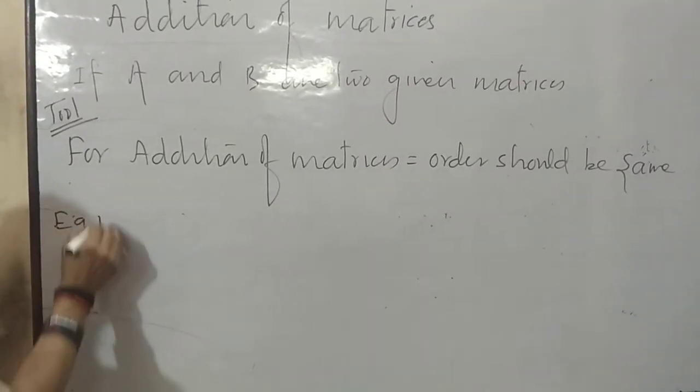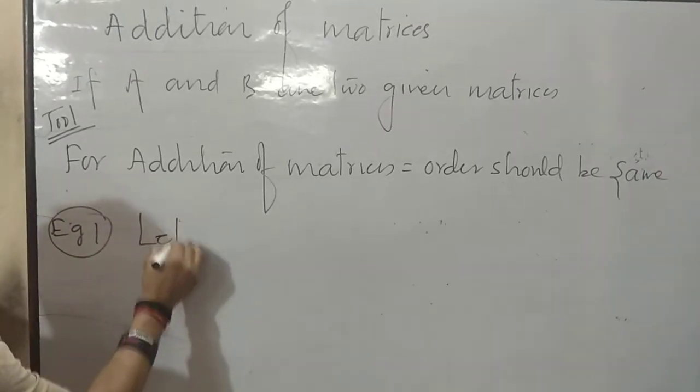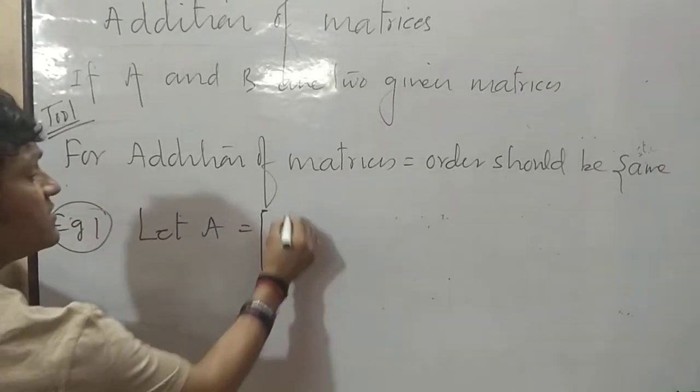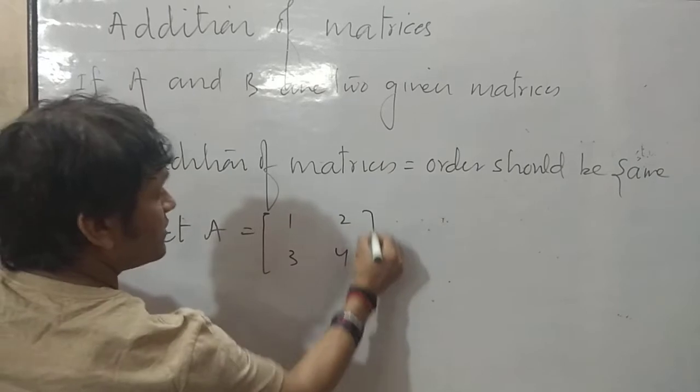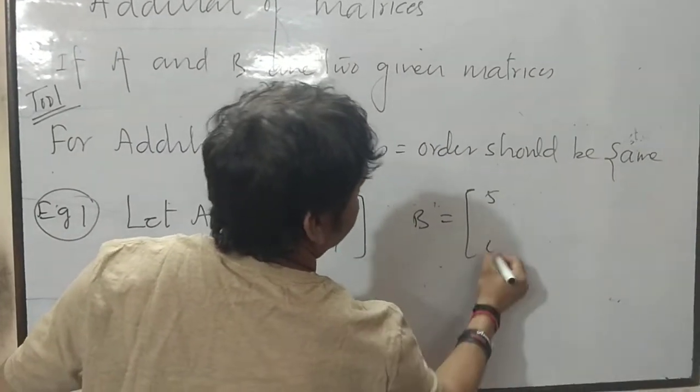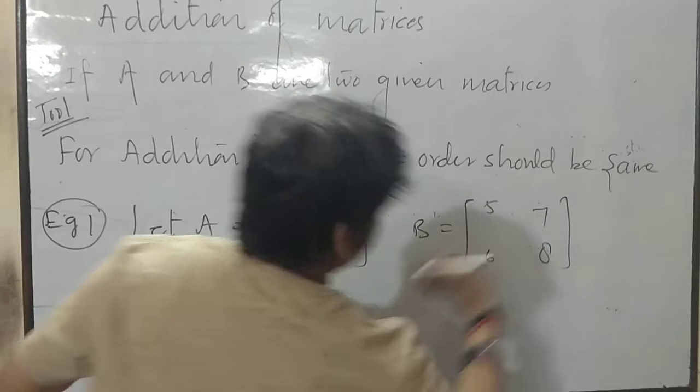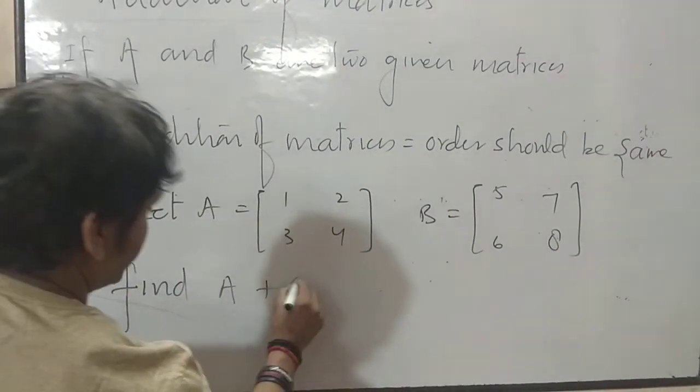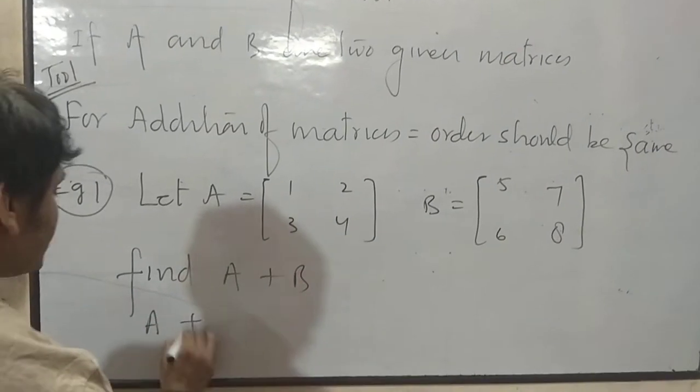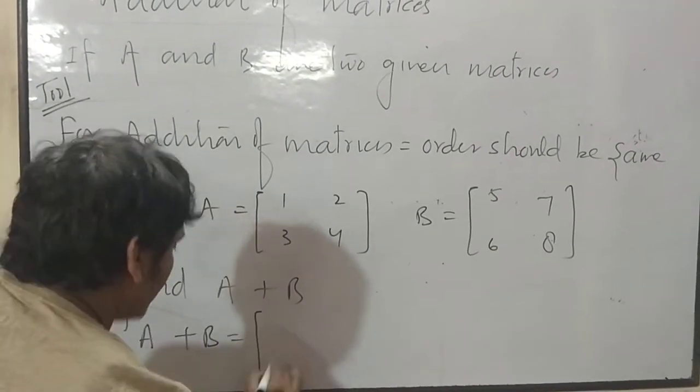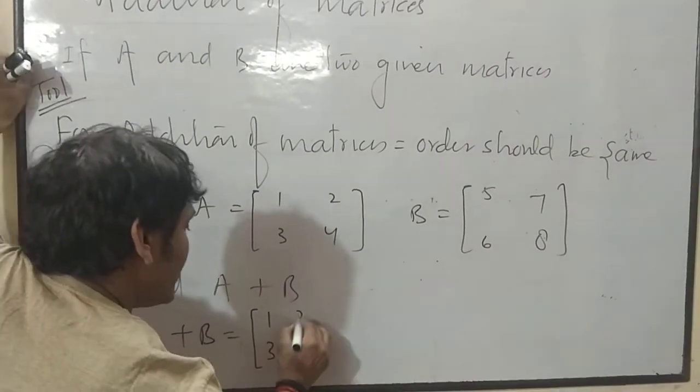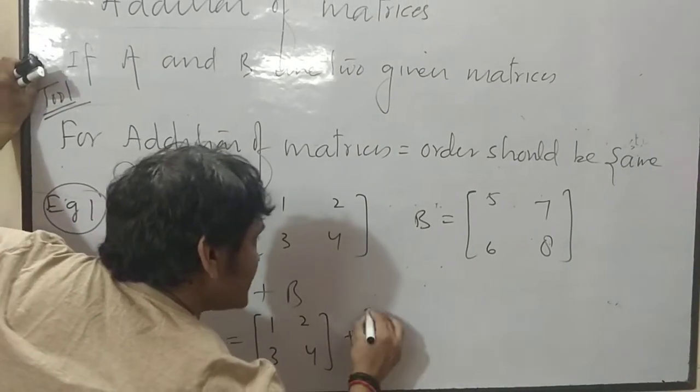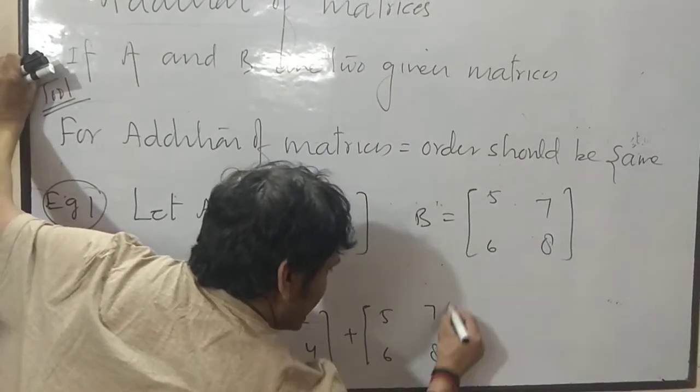Example number 1. Let A equals 1, 2, 3, 4. B equals 5, 6, 7, 8. He is saying find A plus B. A plus B equals in board exam both the matrices plus you will write 1, 2, 3, 4 plus 5, 6, 7, 8.